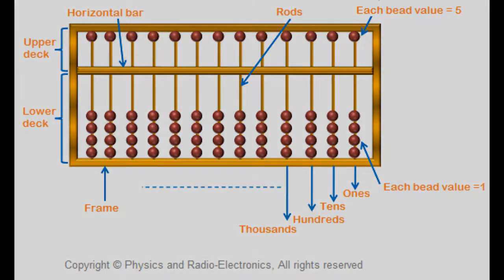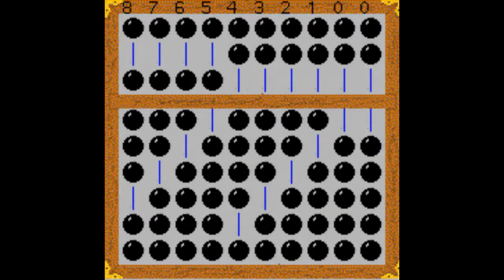When they're pushed towards the center, they are counted, and when they're pushed away from the beam, they're considered to be at zero. Each rod in the abacus always represents a different place holder: mainly hundreds, tens, ones, hundreds, thousands, and then they go up from there. In this picture, the specific abacus is showing the number 87,654,321, and then two zero places at the end.